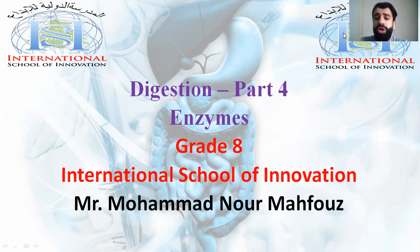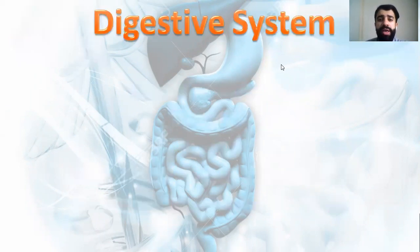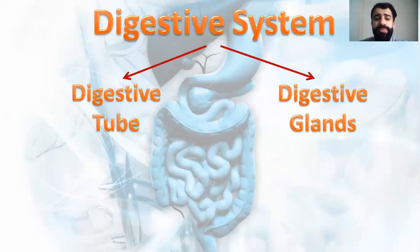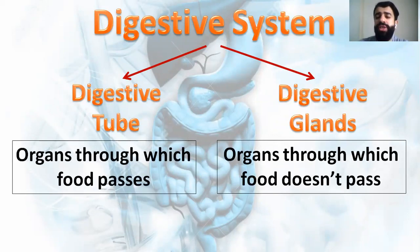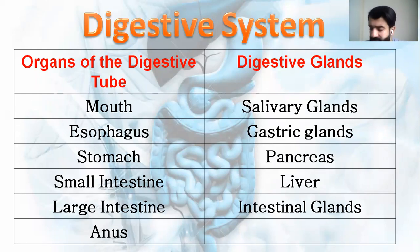Let's now move to Part 4, which is talking about enzymes — what they are, what they do inside our body, and how they function. The digestive system is divided into the digestive tube and digestive glands. The digestive tube contains organs through which food passes, including the mouth, esophagus, stomach, small intestine, large intestine, and finally the anus, where excess food and waste are excreted as stool.